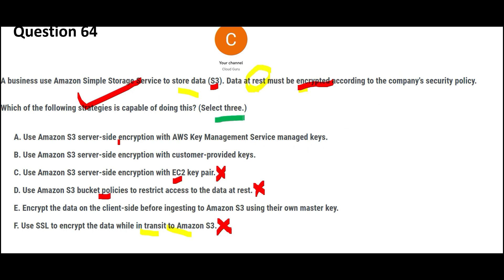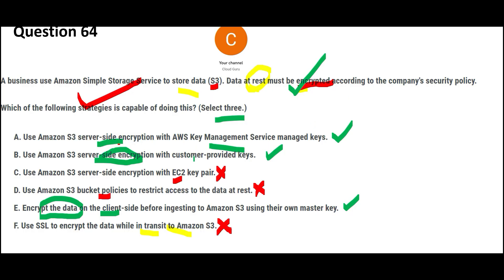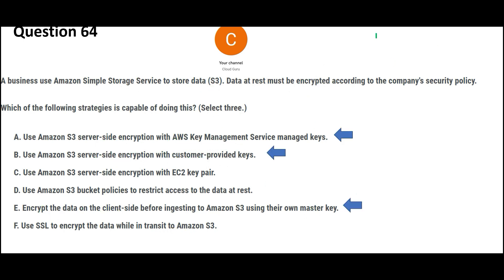I had to choose three answers, and I was able to prove three options are wrong, so I have my answers. The correct options include server-side encryption, and even though one is client-side it will still work as an encryption solution. Option A suggests encrypting using KMS — the keys can be controlled digitally using KMS. You can also use customer-provided keys, where you use your own software to generate the keys. In another option you encrypt the data before ingesting it into S3 using your own master key, so when it lands in S3 it is already encrypted.